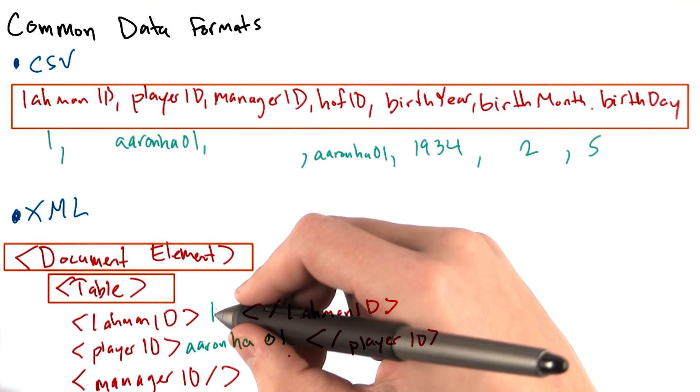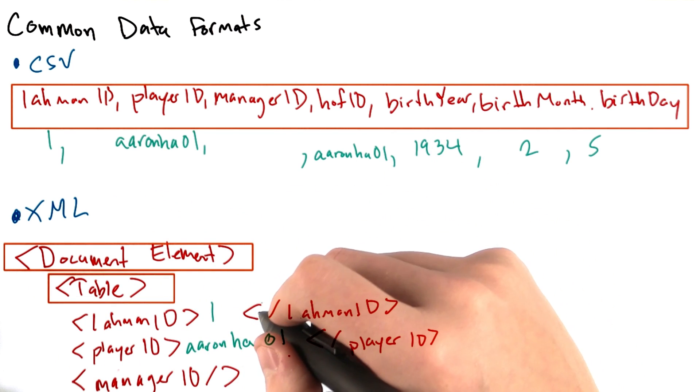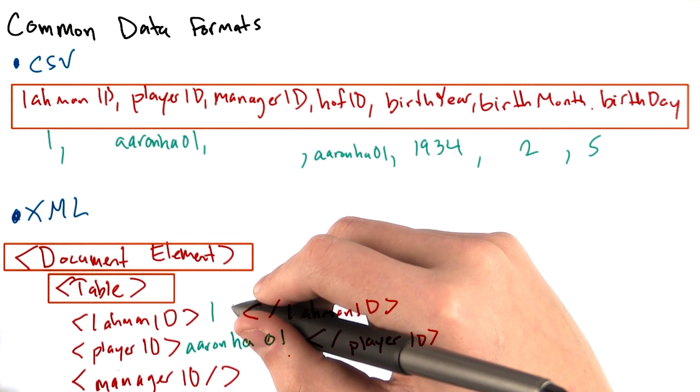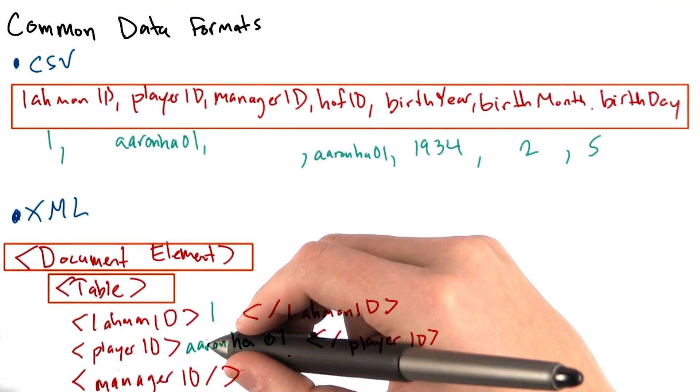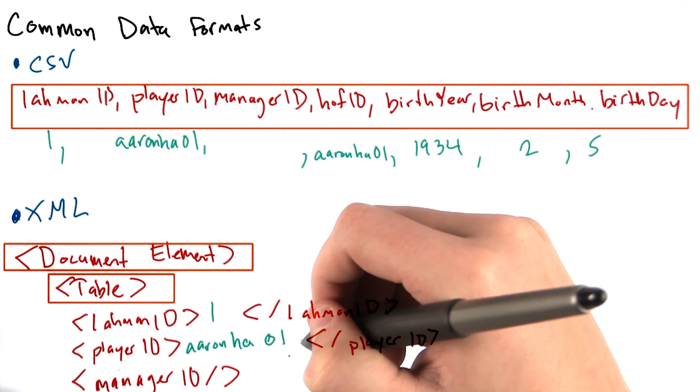The table has a number of children, which corresponds to the values that we just discussed in the CSV. One for Laman ID, Aaron HA01 for player ID, etc.